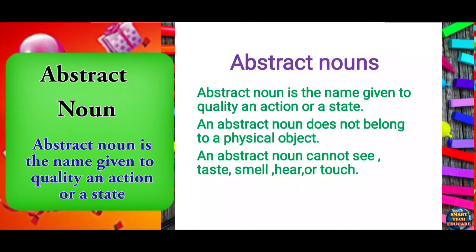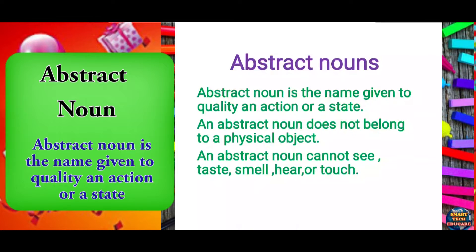Abstract nouns. An abstract noun is the name given to a quality, an action, or a state. An abstract noun does not belong to a physical object. An abstract noun cannot be seen, tasted, smelled, heard, or touched.